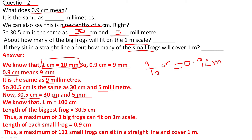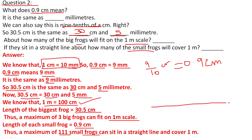We know that 1 metre equals 100 centimetres. The length of the biggest frog is given as 30.5 centimetres — thus a maximum of 3 big frogs can fit on a 1 metre scale. The length of each small frog is 0.9 centimetre only, so a maximum of 111 small frogs can fit in a straight line to cover 1 metre.